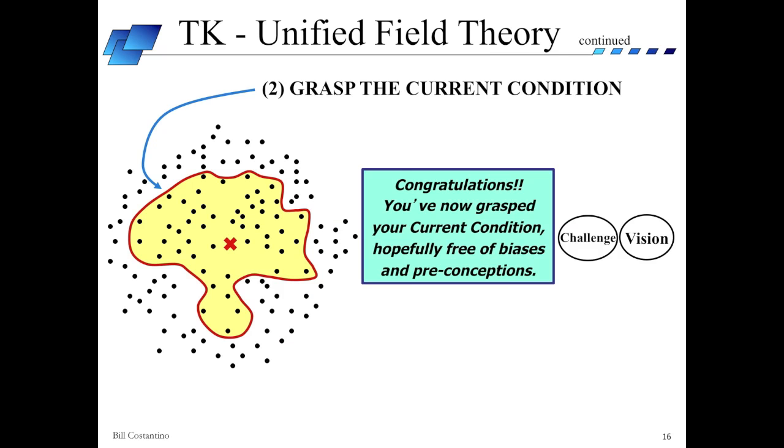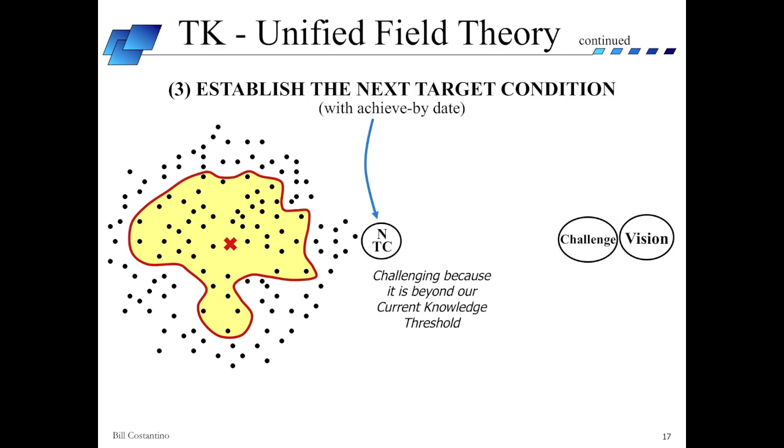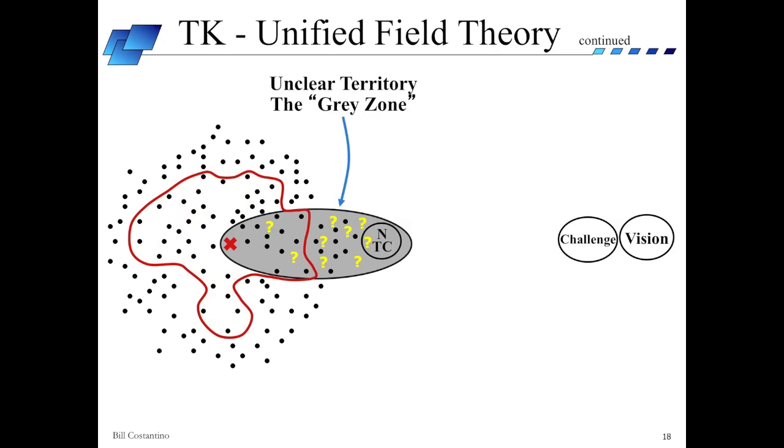With the process analysis completed, we're now ready to move on to the next step of setting the next target condition. You'll notice this next target condition is outside of our current knowledge threshold and directly aligned with the challenge in the vision. It is truly challenging because it's beyond our current knowledge. We don't know how we're going to get there. We are about to enter the gray zone. Remember, within our current knowledge threshold, we are in a zone of apparent certainty. We have high familiarity and a greater sense of comfort.